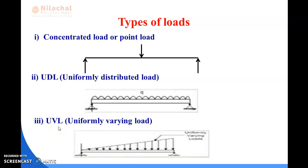Now comes UVL, which stands for uniformly varying load. In each unit of distance, the value of the loading system is not the same — it is different according to each unit span of the beam. You can see in this figure the loading system is gradually increased towards the end of the beam: here it is small and gradually it increases. In each unit span, the loading system is different from another, so this kind of loading system is known as uniformly varying load.